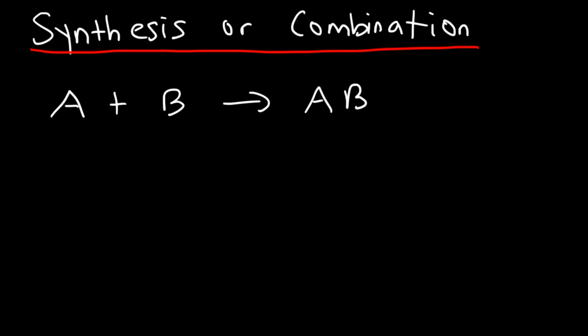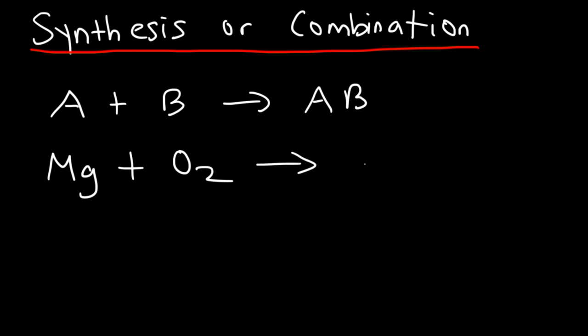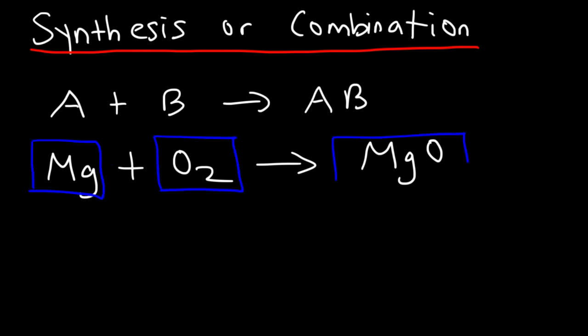In either case, you're building something more complex. For example, if you react magnesium with oxygen gas, this will create magnesium oxide. Here we have a pure element, magnesium, reacting with another pure element to make a compound.